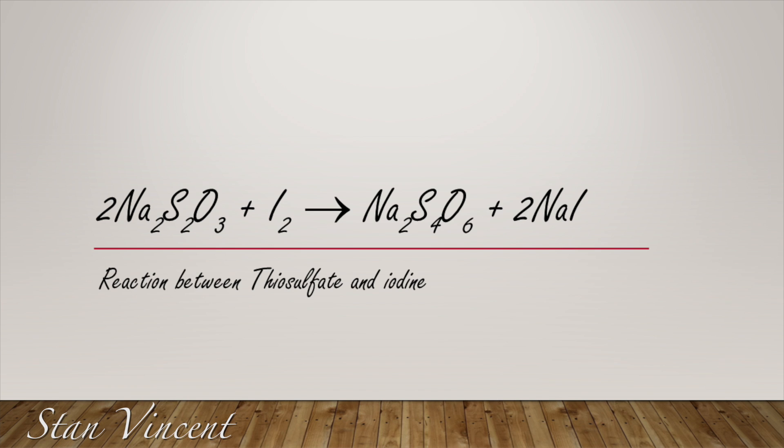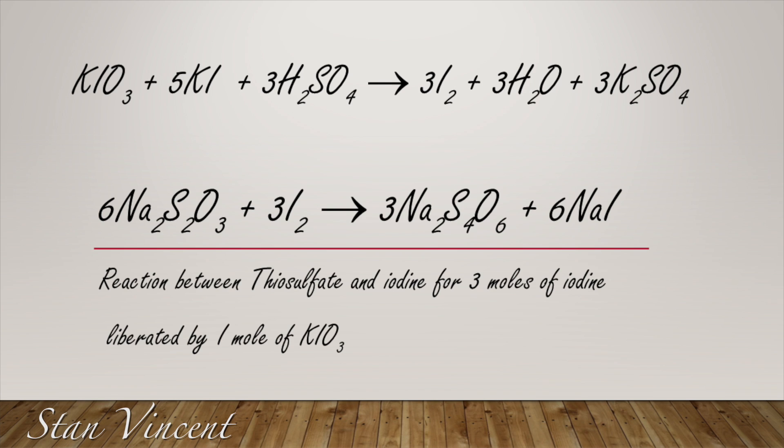In the previous reaction, potassium iodate when reacted with potassium iodide liberates three moles of iodine. So instead of one mole of iodine we're going to get three moles of iodine for every mole of potassium iodate. Since we will be getting three moles of iodine, we will need six moles of sodium thiosulfate to obtain a balanced equation, which gives three moles of sodium tetrathionate and sodium iodide.